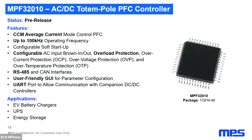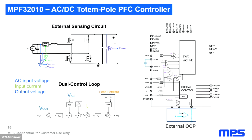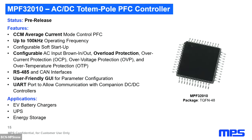The controller operates in average current mode: we sense the input current and work with average mode control. The switching frequency can reach up to 100 kHz. Inside the converter we have all protections: brownout, overload, overvoltage, and over-temperature. Communications can be RS485 or CAN interface. We have a graphical user interface where you can set up all configurations, and any closed-loop parameter such as PI, switching frequency, and proportional gain can be configured to adapt to your needs and load.